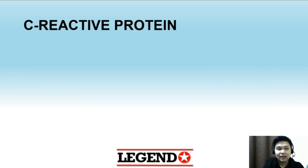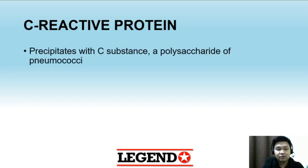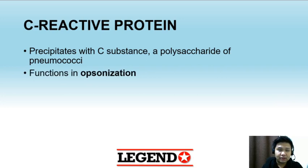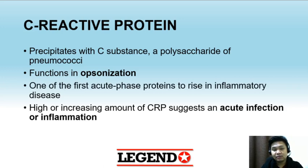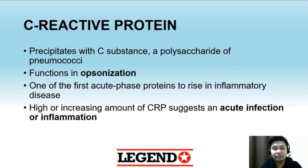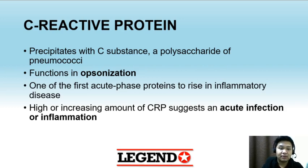The next protein is C-reactive protein. CRP precipitates with C-substance, a polysaccharide of pneumococci, hence the name. It functions in opsonization, enhancing phagocytosis, and is one of the first acute phase proteins to rise in inflammatory disease. Higher increasing amounts of CRP suggest acute infection or inflammation. CRP is measured as an excellent marker of inflammation — it is increased by up to 1,000 times in inflammatory states.